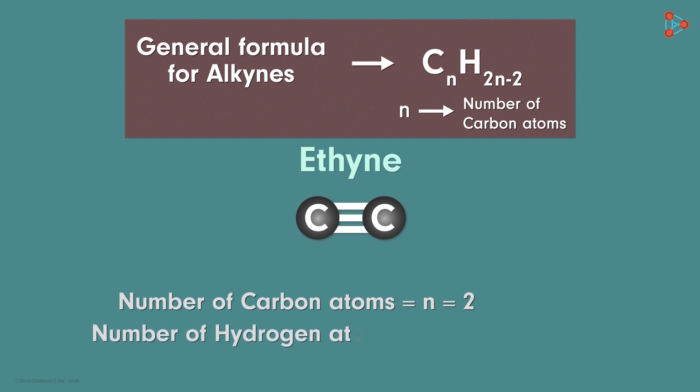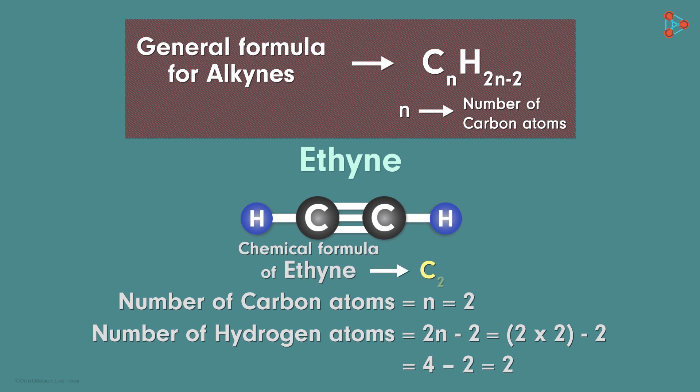The number of hydrogen atoms will be 2 times 2 minus 2, which gives us 2 hydrogen atoms. Thus the formula for ethyne is C2H2.